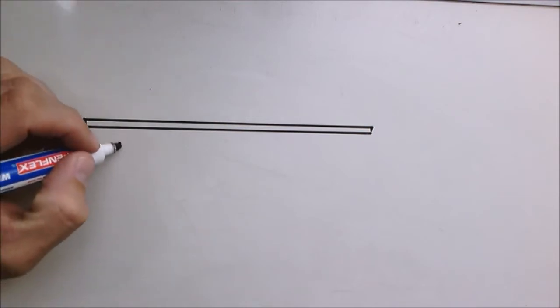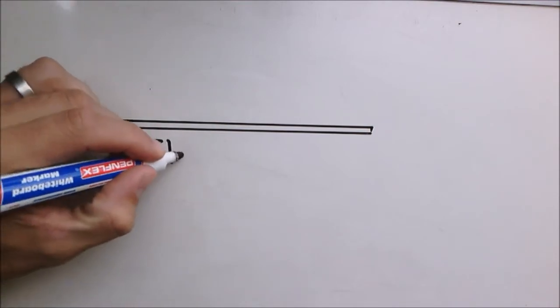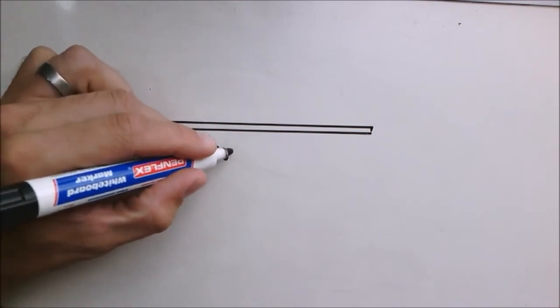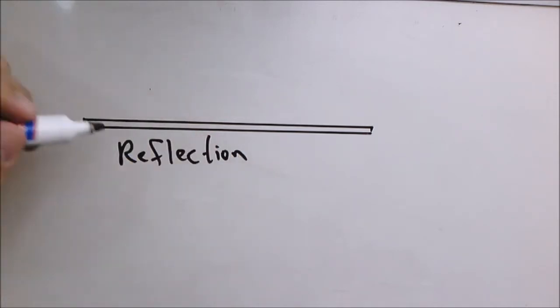Okay, so we're talking about reflection. This represents a mirror or a surface upon which a light ray is reflected. As you can see, it's one single plane, and that's how we're going to represent it.